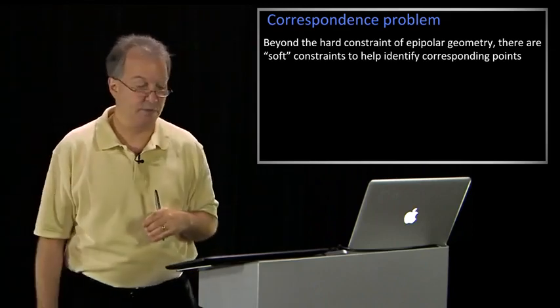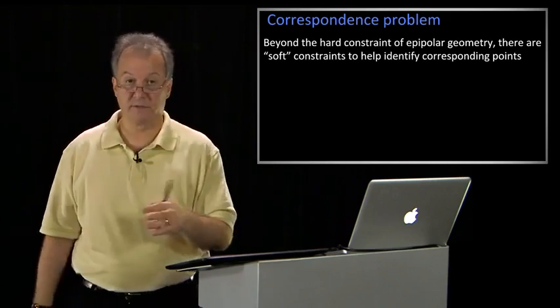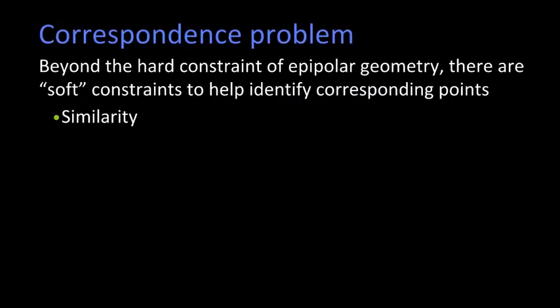Beyond the hard constraint of epipolar geometry, there are other types of constraints which we might call soft constraints. One is similarity which says that pixels in the left image should look about like the pixels in the right image if you have the right match.